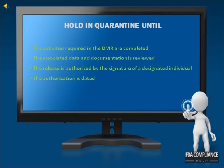The facility is to establish and maintain procedures for final device acceptance to ensure that each production run, lot, or batch of devices meets acceptance criteria. The devices shall be held in quarantine or otherwise adequately controlled until released. The devices shall not be released for distribution until the activities required in the DMR are completed, the associated data and documentation is reviewed, the release is authorized by the signature of a designated individual, and the authorization is dated.